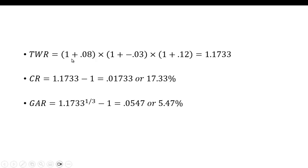The terminal wealth ratio would be (1 + 0.08) times (1 + negative 0.03) times (1 + 0.12). If you multiply that out, you get 1.1733.